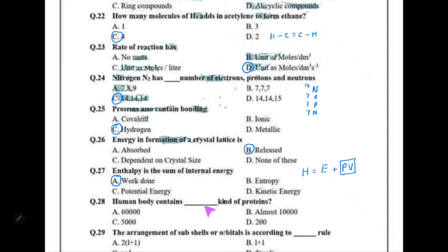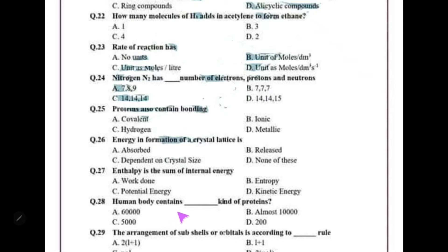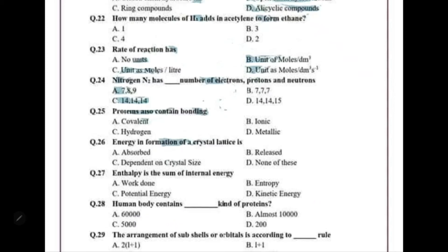How many kinds of proteins does the human body contain? Based on my study, the human body contains between 18,000 and up to 400,000 proteins. The book likely states 60,000, which is within the range. So I will select choice A — approximately 60,000.